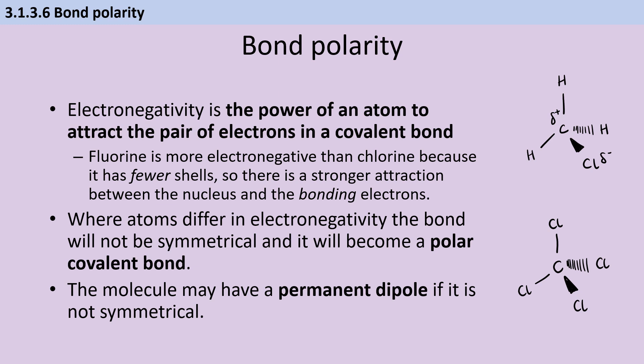To describe differences in intermolecular forces, we need to be able to talk about bond polarity. Electronegativity is the power of an atom to attract the pair of electrons towards it in a covalent bond. I could say that fluorine is more electronegative than chlorine, because it has fewer shells, so there's a stronger attraction between the nucleus and the bonding electrons. Remember, it's those bonding electrons, not just generic outer shell electrons like lone pairs.